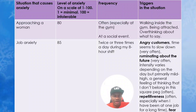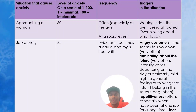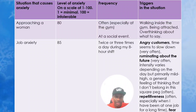Number one: write in the situations that cause anxiety for you. The first one I have is approaching women. The level of anxiety on a scale of one to a hundred — where one is minimal and a hundred means it's intolerable — my own scale is 80. The third is the frequency: how often does this happen? Mine happens mostly at social events, sometimes at the gym. And a trigger in the situation is walking inside the gym, seeing a lot of options staring back at you, and wanting to approach one.